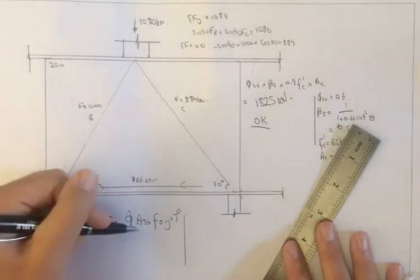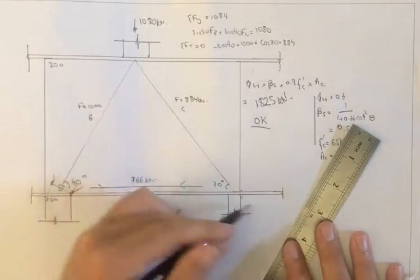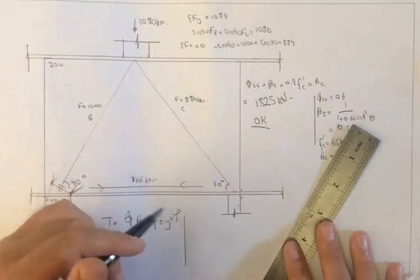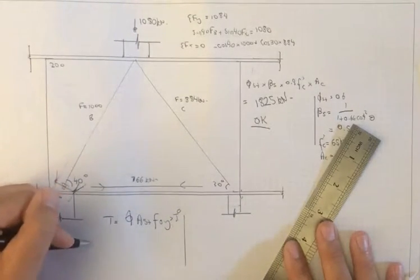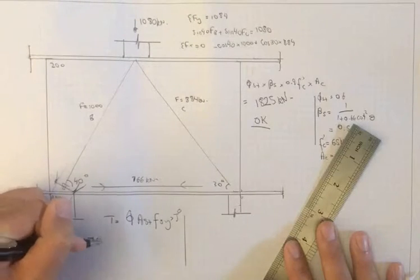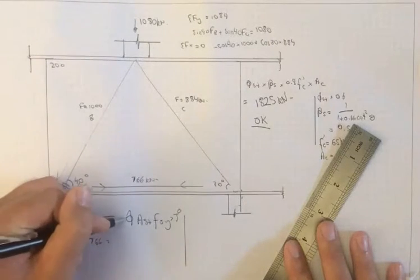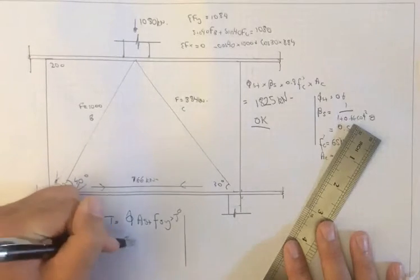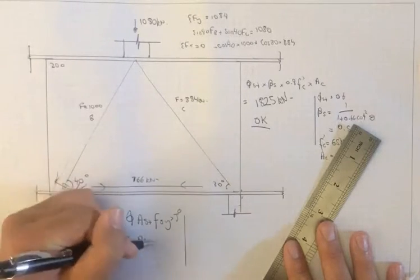We're probably best off working out the area of steel required for this tensile force. So 766 kilonewtons equals capacity factor 0.8 times AST times 500.